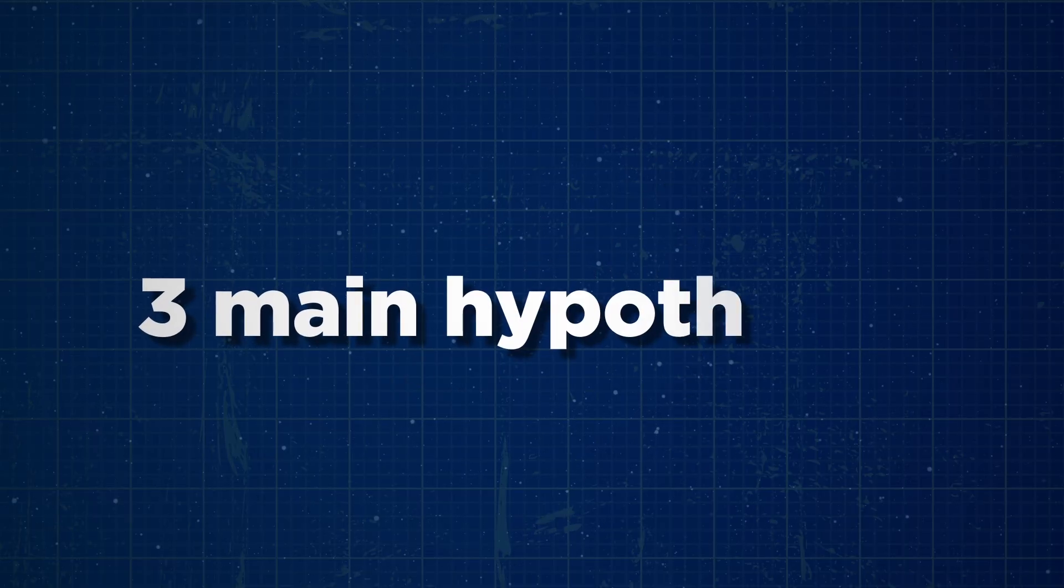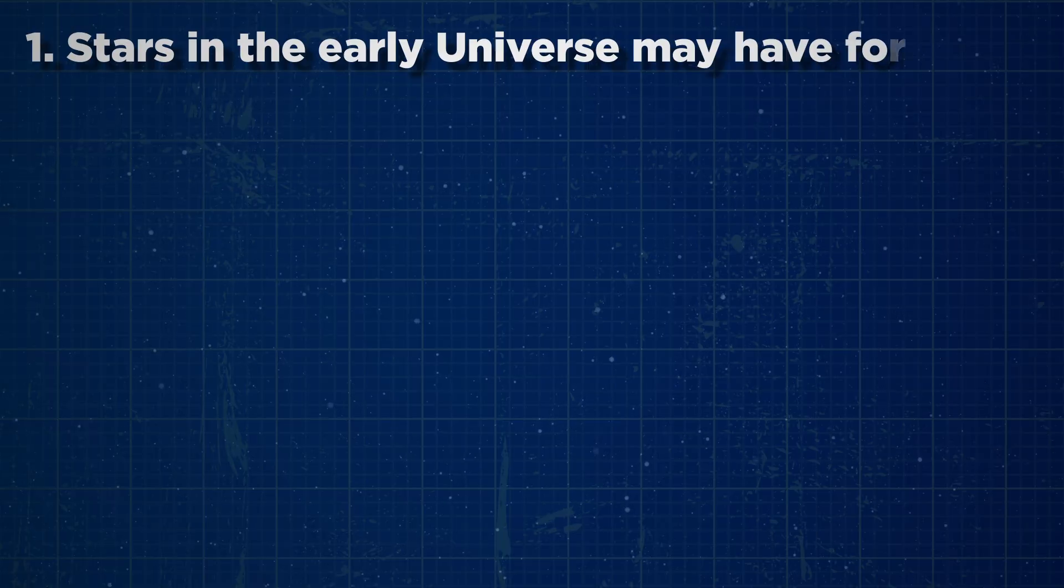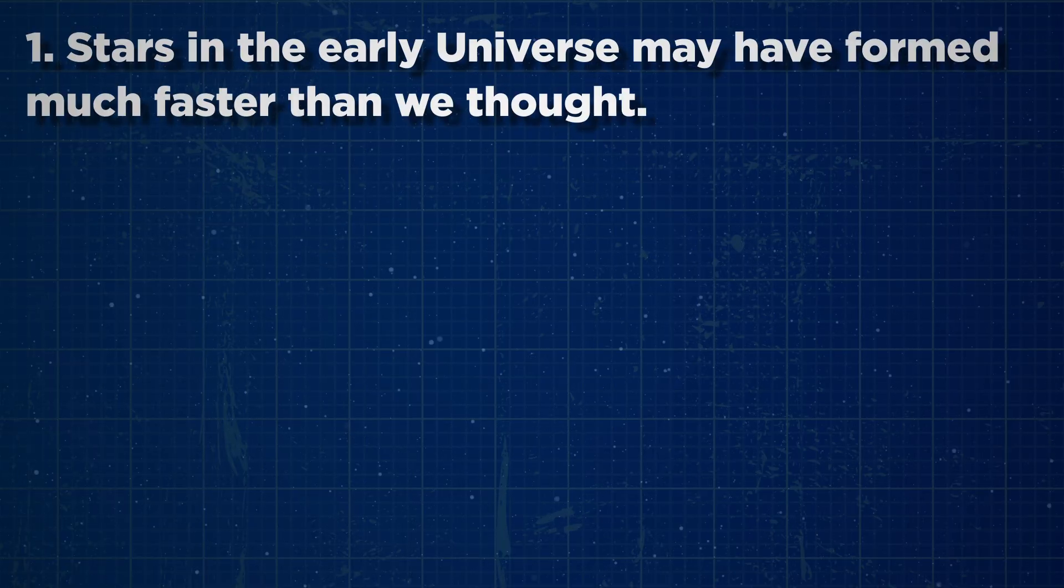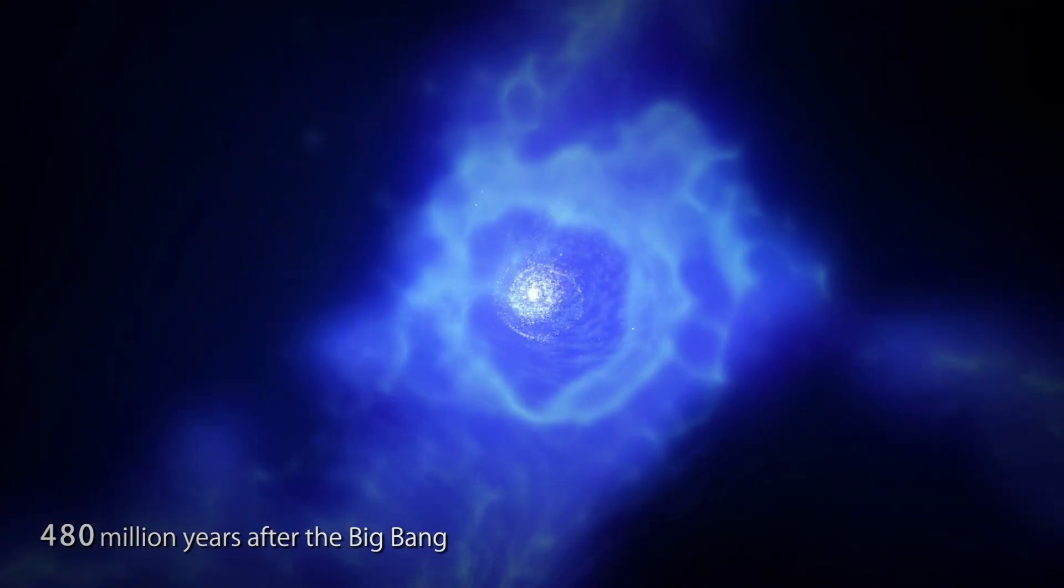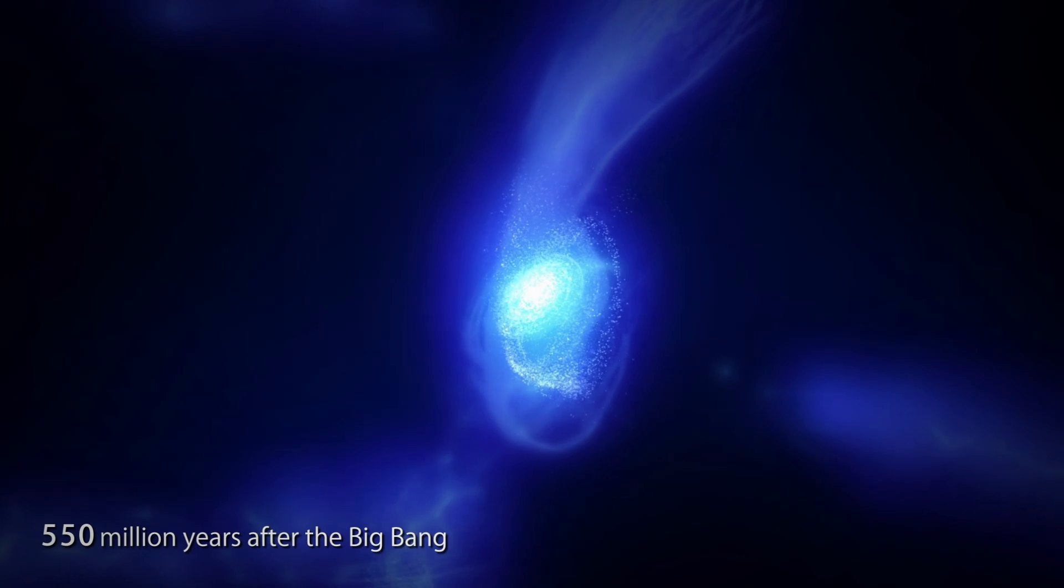Scientists have proposed three main hypotheses. The first is that stars in the early universe may have formed much faster than we think. Gravity may have collected matter more efficiently. And the conditions in the young universe favored the rapid growth of galaxies.